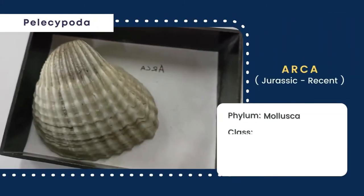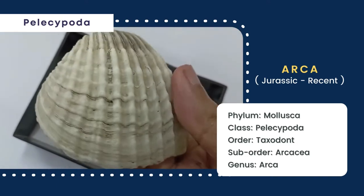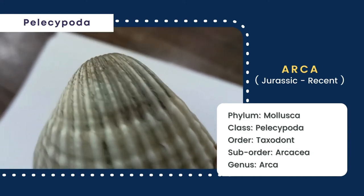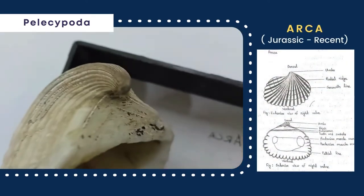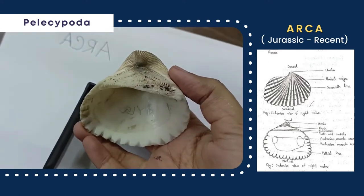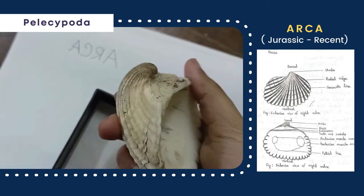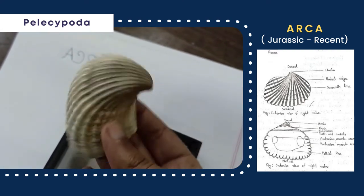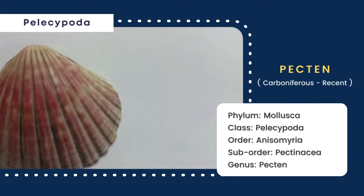Next, this is Arca, whose shell is thick, convex, and inequilateral. The length and height are almost equal. The exterior of the valve is sculptured with growth lines and radial ribs. The umbo is present and slightly curved. The valve shows taxodont type dentition. The adductor muscle scars are marked in the left and interior views of the valve. The valve is heteromyarian type, and the ventral margin is crenulated.